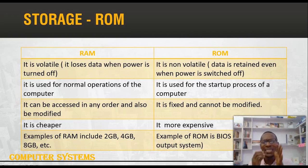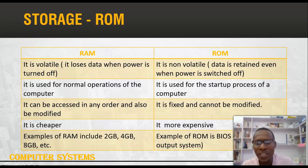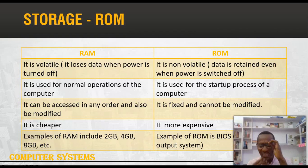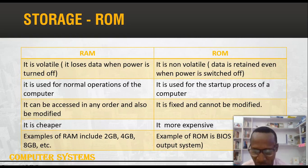Data in RAM can be accessed in any order and can be modified. In the case of ROM, they have a fixed rule of accessing them and cannot be modified, as the name implies — read only. It is worth knowing that ROM is more expensive than RAM.